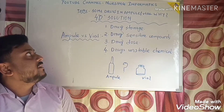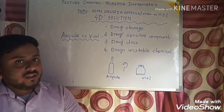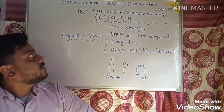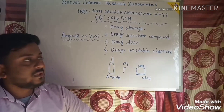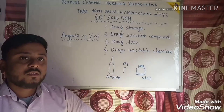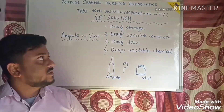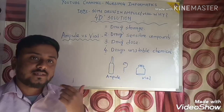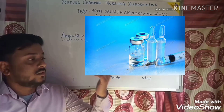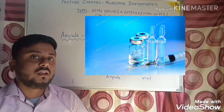Hello friends and welcome to our channel in nursing informatics. Today we are going to discuss an important and interesting topic: why are some drugs kept in the ampoule and some drugs kept in the vial? During my student life, this question was also arising in my head — why do we keep some drugs in the ampoule and some in the vial?